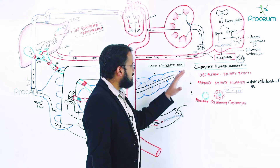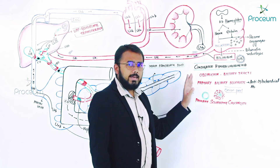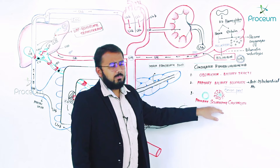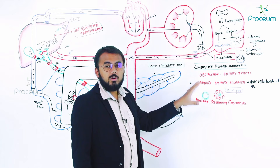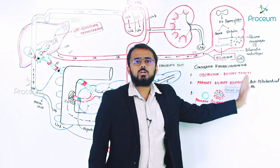All these causes — obstruction, primary biliary sclerosis, primary sclerosing cholangitis — are pointing toward problems with the biliary tracts. These can be classified as obstructive causes of conjugated hyperbilirubinemia. There are also non-obstructive causes where the biliary tracts are fine but conjugated bilirubin levels still increase.